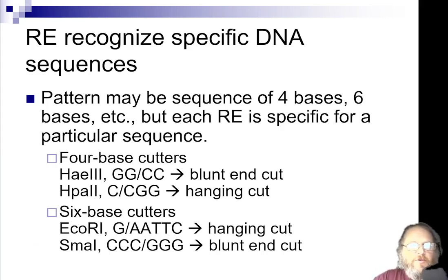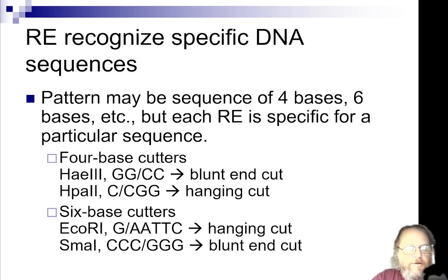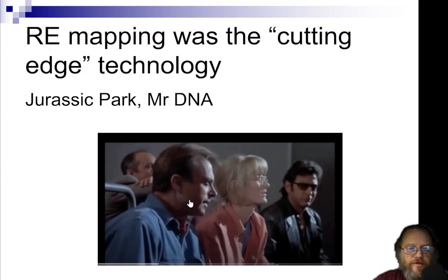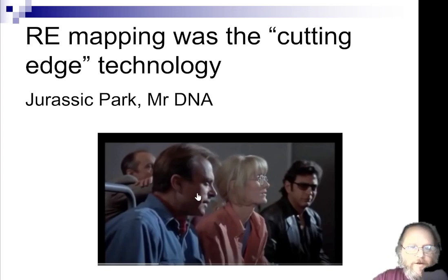These are examples of sequences that restriction enzymes might recognize. In addition to different sequences recognized, some enzymes cut at a four-base or six-base recognition site. EcoRI, shown here, is a very common enzyme and one of the first discovered. The technology has been around quite a while — if you search 'Jurassic Park Mr. DNA' on YouTube, there's a corny but informative little video I certainly recommend for your amusement.